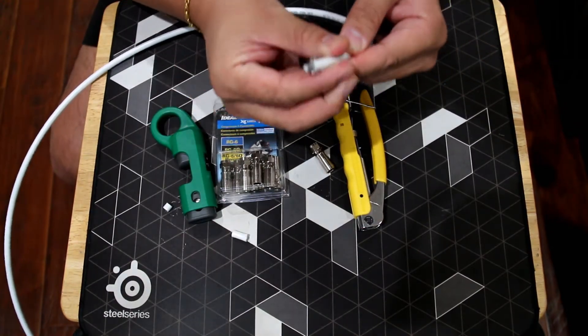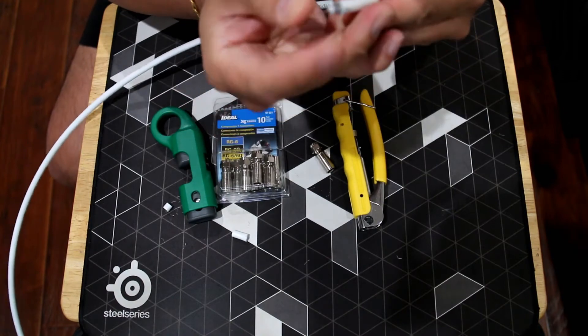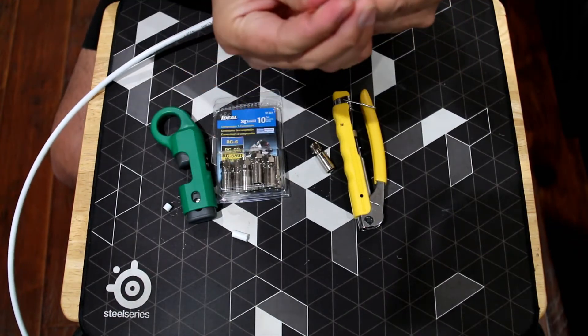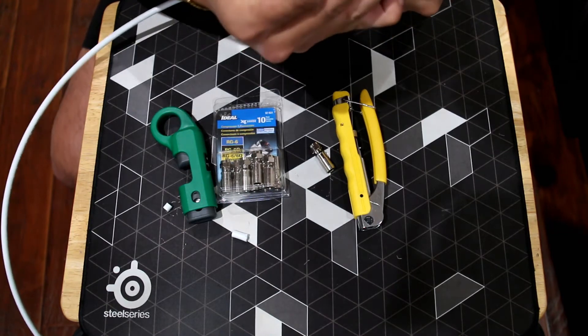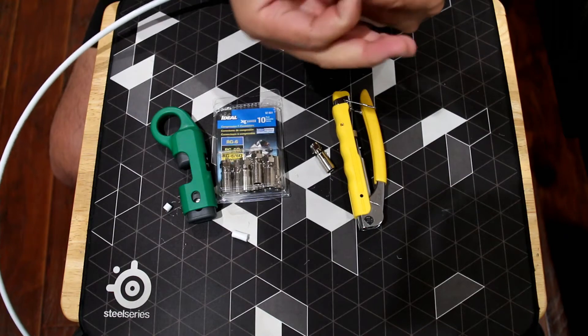Now, push back all the braided wire back into coax. You don't want any braided wire around the copper end. Keep pushing until you see no more braided wire.